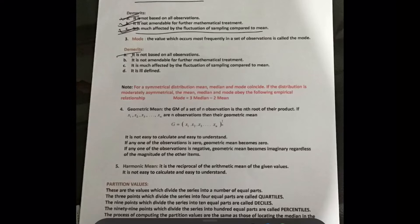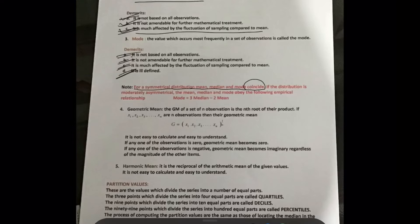Mode is simply the value which occurs most frequently in a set of observations. Demerits: it is not based on all observations, it is not amenable for further mathematical treatment, it is much affected by the fluctuation of sampling, and it is not very well defined — mode can also be used for qualitative characteristics. For a symmetrical distribution, mean, median, and mode coincide. This can be a question.